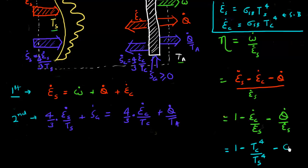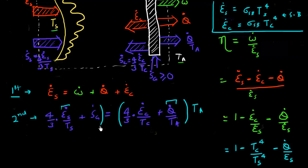The only term I am left to evaluate is Q/E_S, and I'm going to make use of the second law of thermodynamics to derive this. I see there's a Q term and an E_S term, so I'm going to divide both sides by E_S. I also see a T_A term, so I'm going to multiply both sides by T_A. Let me do that — multiply the left-hand side by T_A as well, and then divide both sides by E_S.